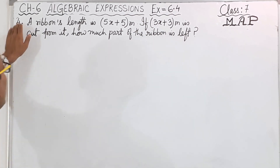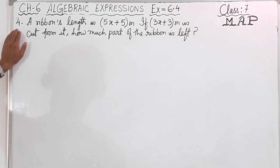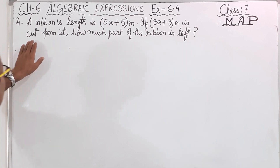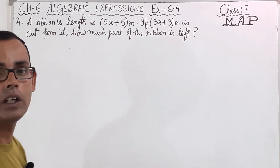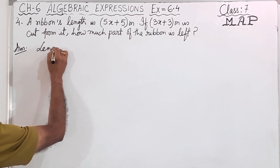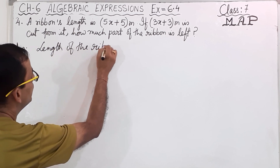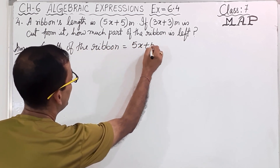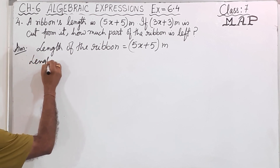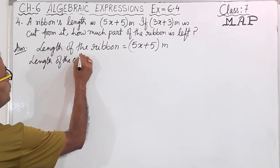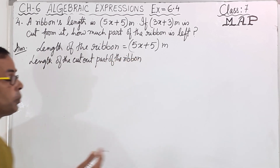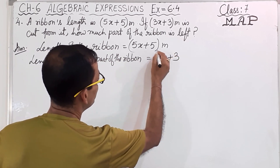Till our last part we did up to Question 3, and now today we will solve Question No. 4. What they are telling in Question No. 4: a ribbon's length is 5x plus 5 meters. If 3x plus 3 meters is cut from it, how much part of the ribbon is left? So we will write: length of the ribbon is 5x plus 5 meters. And length of the cut out part of the ribbon is 3x plus 3 meters.